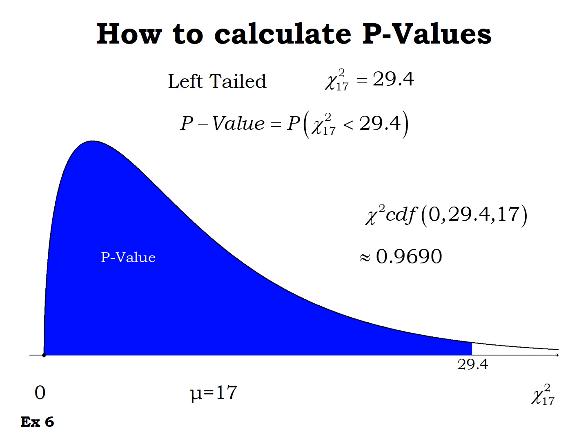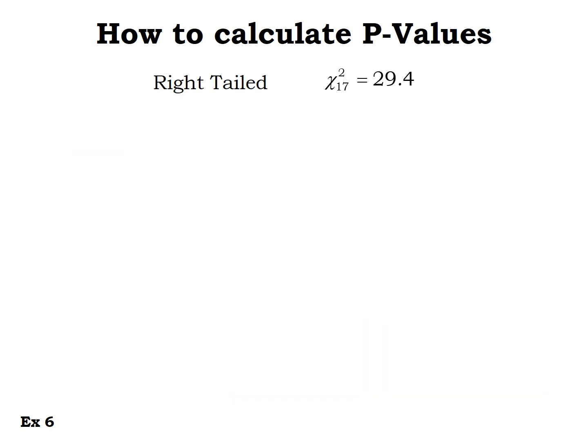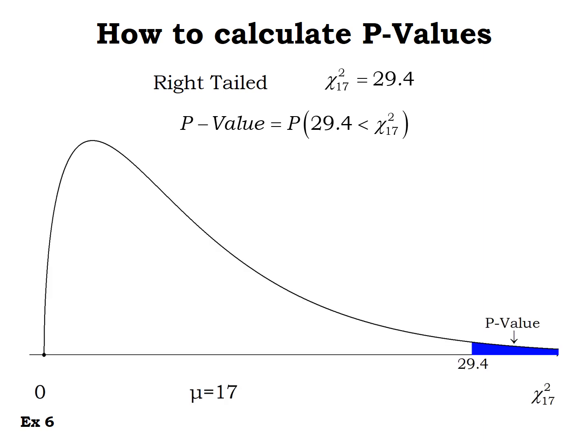For a right-tailed test with chi-squared score 29.4 and 17 degrees of freedom, the p-value is the probability of being bigger than 29.4 — the area to the right. Using chi-squared CDF from 29.4 to infinity, we end up with a p-value of 0.0310.